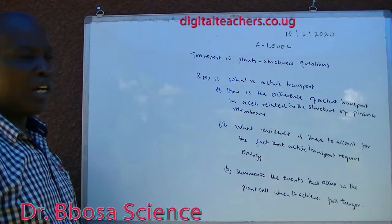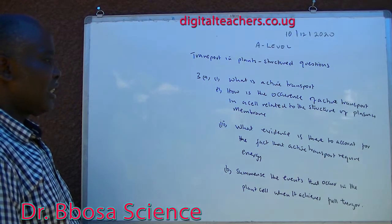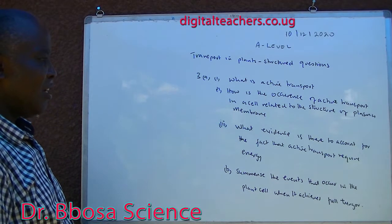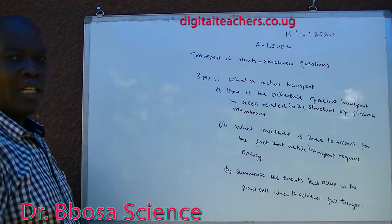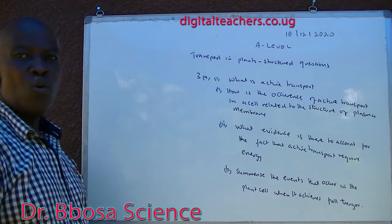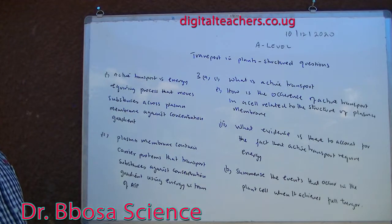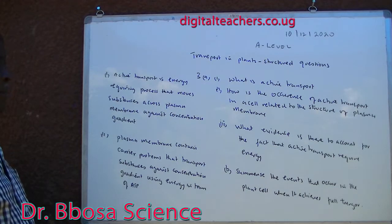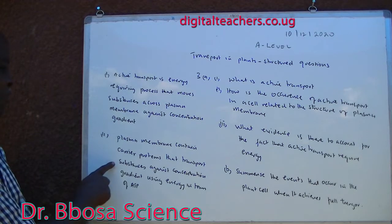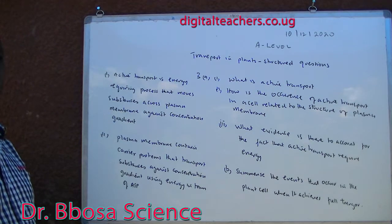Three, part A: one, what is active transport? Two, how is occurrence of active transport in a cell related to the structure of plasma membrane? Three, what evidence is there to account for the fact that active transport requires energy? Active transport is an energy-requiring process that moves substances across plasma membrane against a concentration gradient. Plasma membranes contain carrier proteins that transport substances against concentration gradient using energy in the form of ATP.